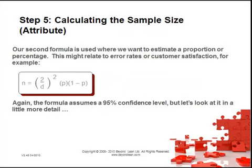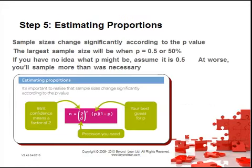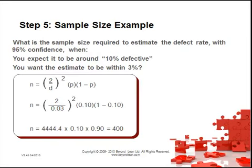Calculating sample size from an attribute data perspective: a second formula is used where you want to estimate a proportion or percentage, such as error rates or customer satisfaction. The formula assumes a 95% confidence level. Sample sizes change significantly according to the p-value — the largest sample size will be when p equals 0.5 or 50%. If you have no idea what p might be, assume it's 0.5. For example, to estimate a defect rate with 95% confidence when you expect around 10% defective and want the estimate within 3%, your sample size would be 400.